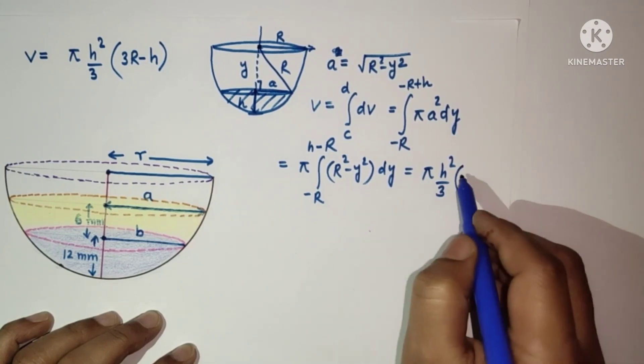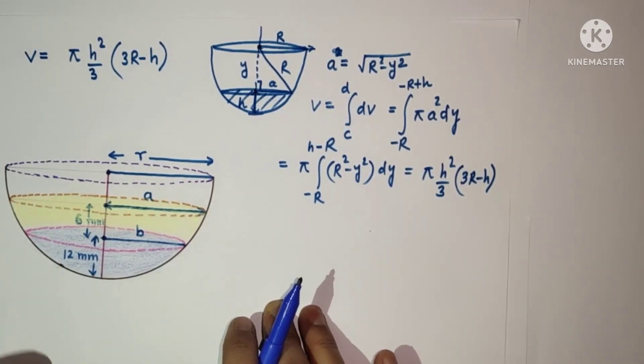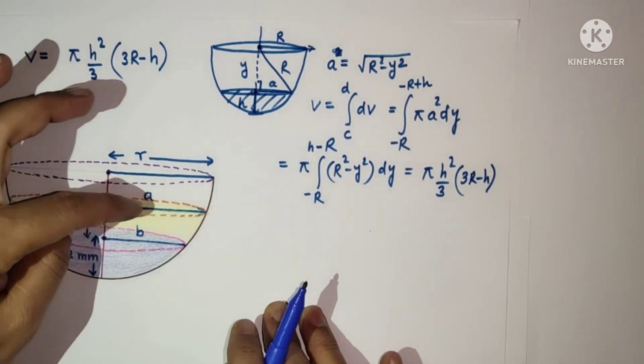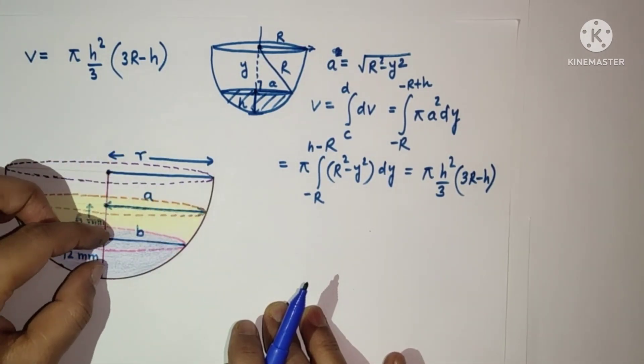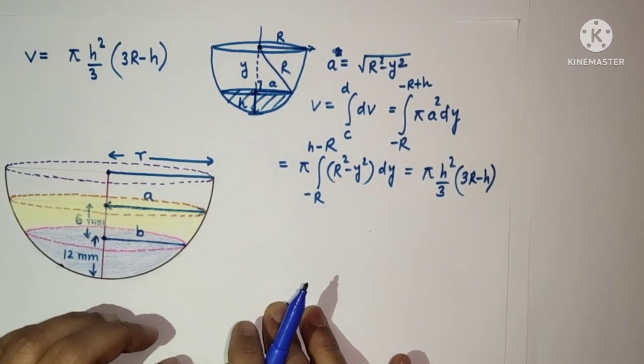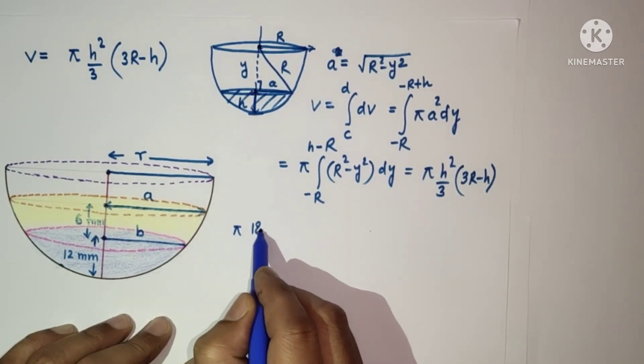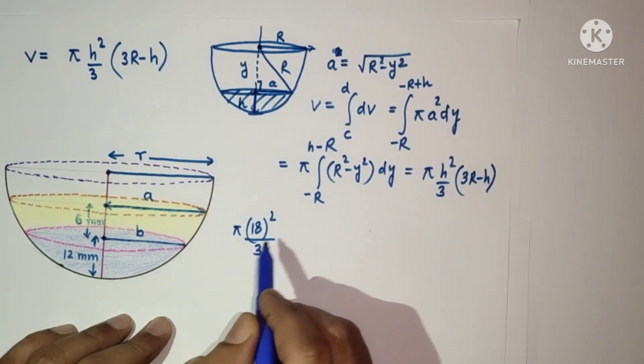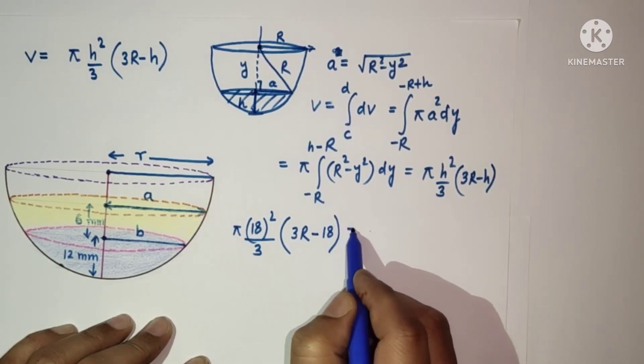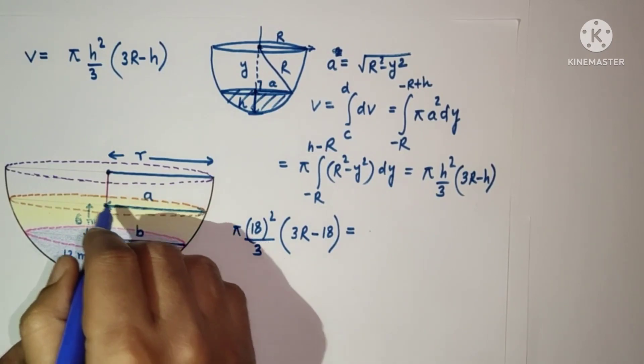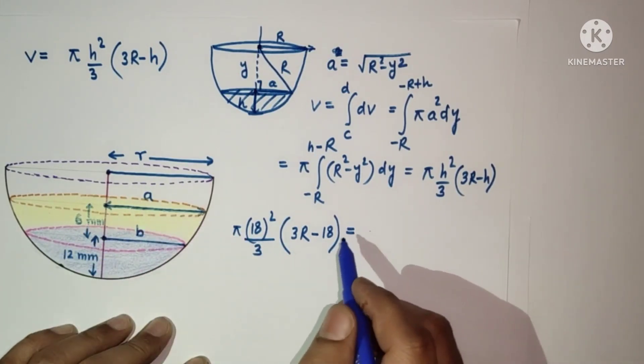In this problem, the volume of oil and the volume of water are both equal. So the volume of the whole hemisphere is twice the volume of water. According to this condition: pi times 18 squared by 3 times (3R minus 18) equals 2 times pi times 12 squared by 3 times (3R minus 12).